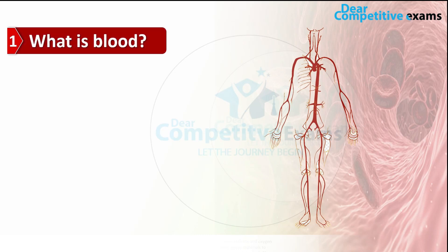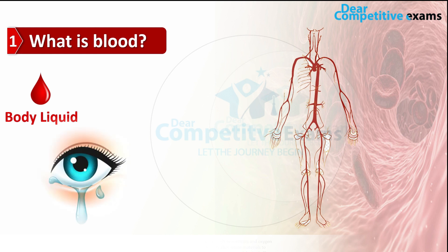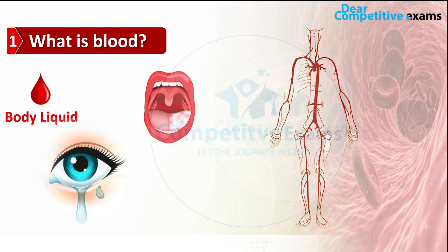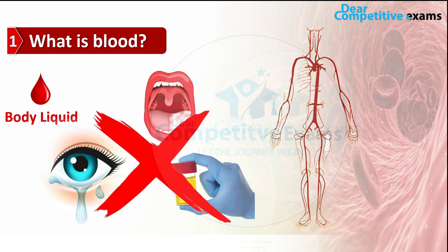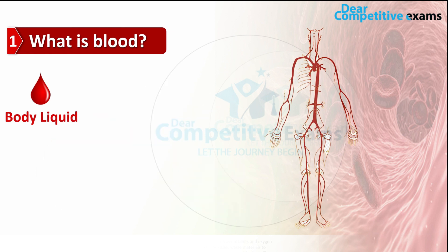What is blood? How do we define blood? Blood is a body fluid, but it's not like tears, mucus, or urine. It's a kind of complex tissue.